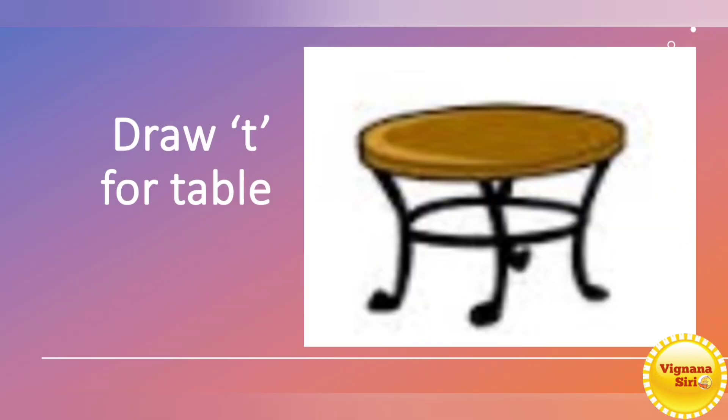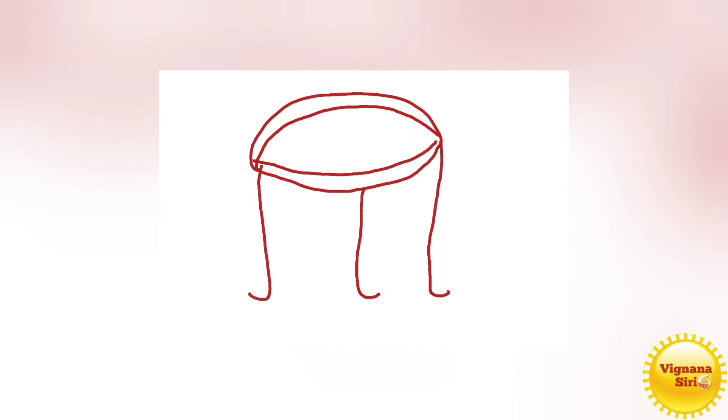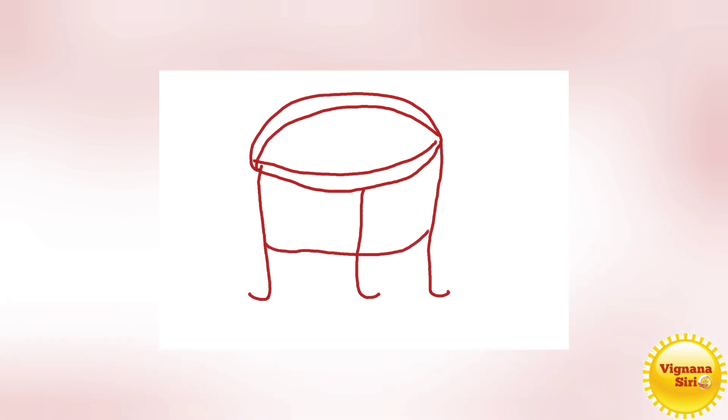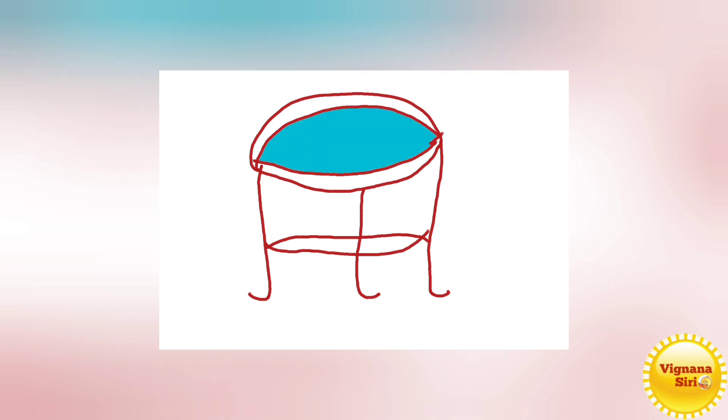Draw T for table. We have to draw T for table. First, write the small letter T. Then draw a curve like this, and again curve upward and downward. On the left side and right side, draw like this in the opposite way — standing line with curve, and in the middle a small curve again. Our table is ready! We can color it with your own favorite colors. I am coloring with blue.